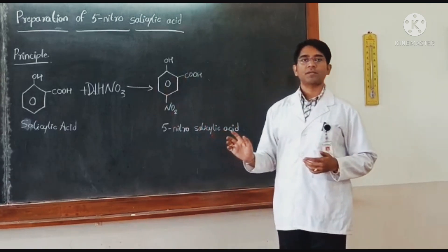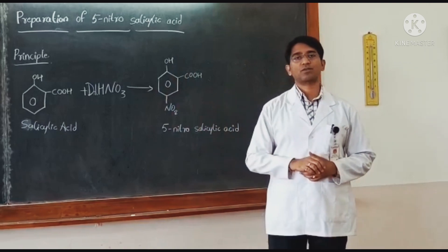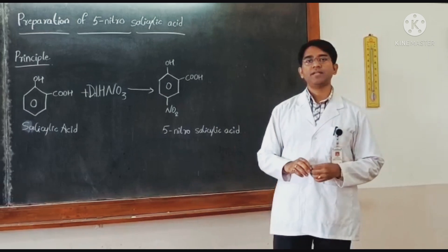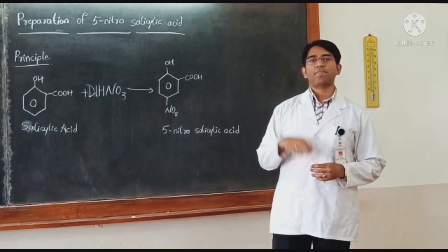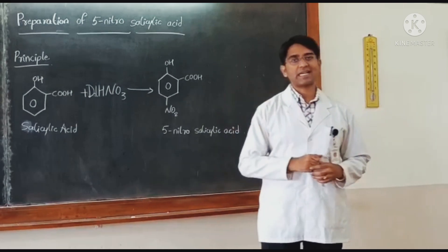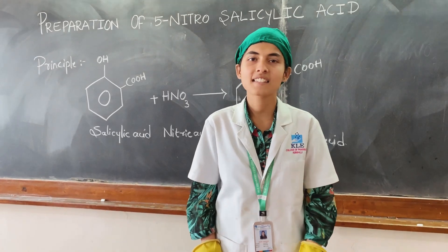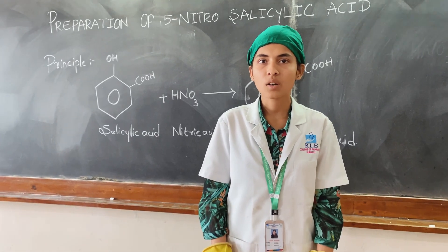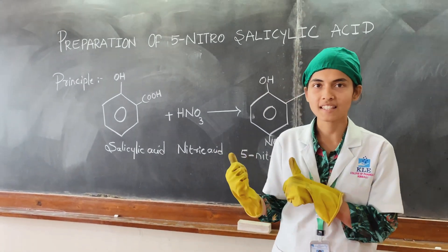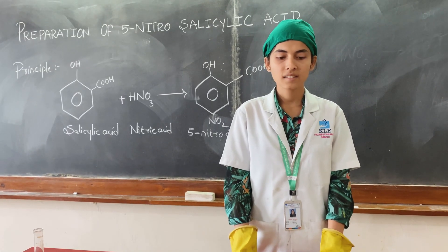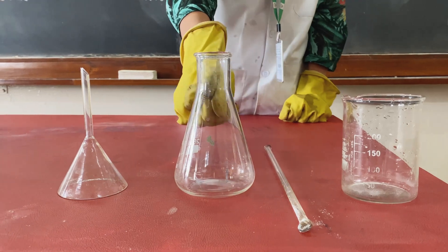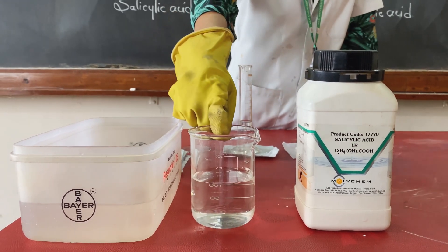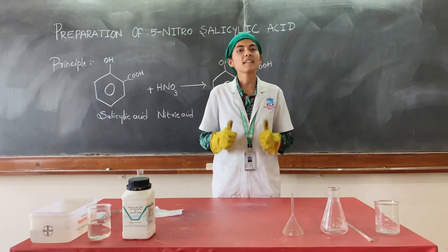This was with respect to the principle. Now I call upon my student Rohini Adhimani to provide the insights of preparation of 5-nitrosalicylic acid. Today I am going to carry out the synthesis of 5-nitrosalicylic acid. The apparatus used here are beaker, glass rod, conical flask, and funnel. Chemicals used here are salicylic acid, nitric acid, and ice water. All are set — let's begin the preparation.